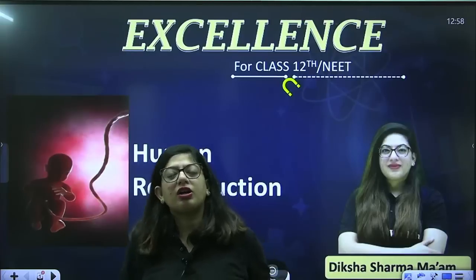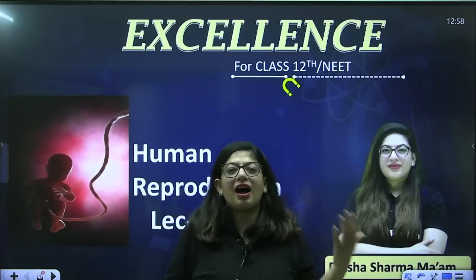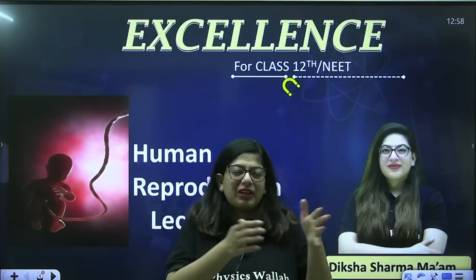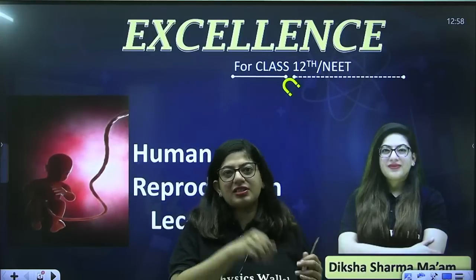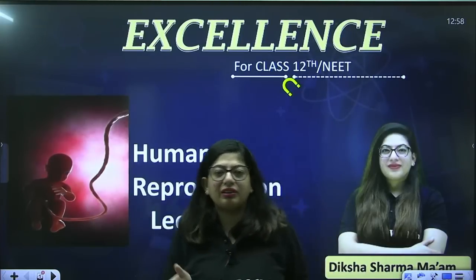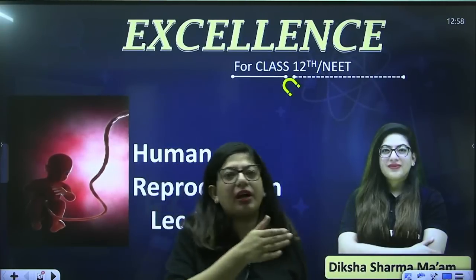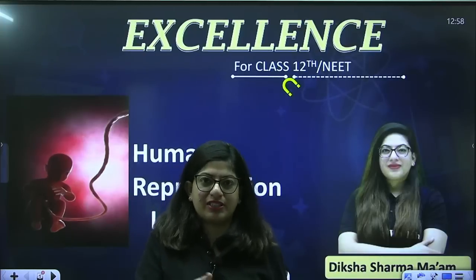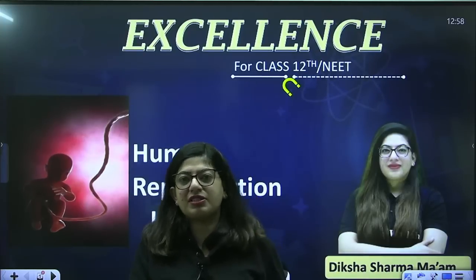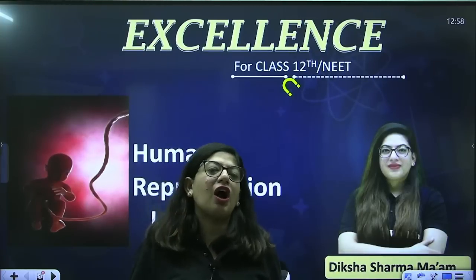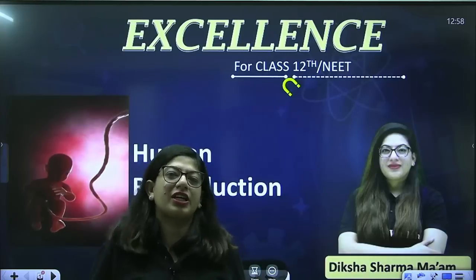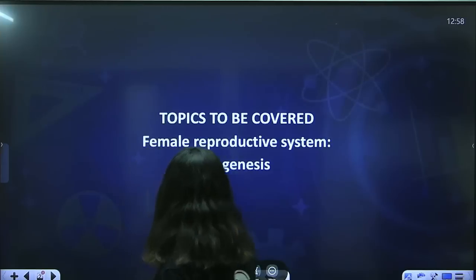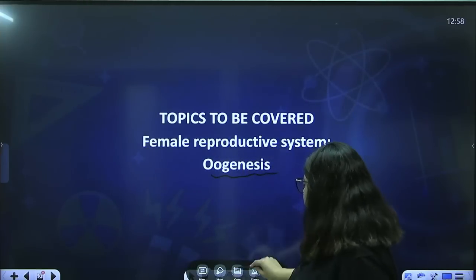Today we are going to talk about how gametes are formed in the female. In previous classes we followed a pattern: first male reproductive system, then spermatogenesis, then female reproductive system. So now we will discuss oogenesis — the formation of the female gamete.